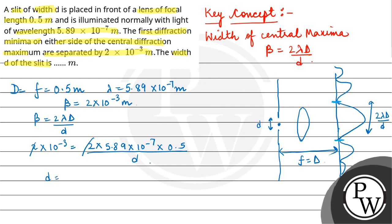So d would be equal to 5.89 × 10^-7 × 0.5 divided by 10^-3. Therefore, d equals 5.89 × 0.5 divided by 10^-4 meter.